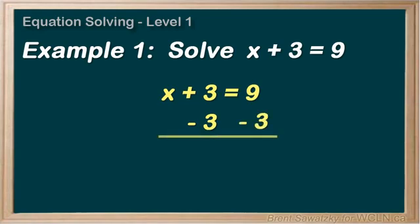Draw a line here and see where we're at. On the left, x plus 3 minus 3 leaves us with just x. Perfect. And on the right, 9 minus 3 leaves us with 6. So x equals 6. We've successfully isolated the variable.